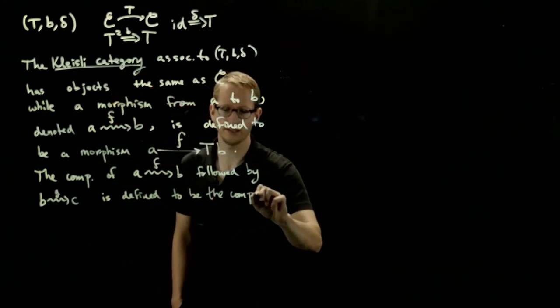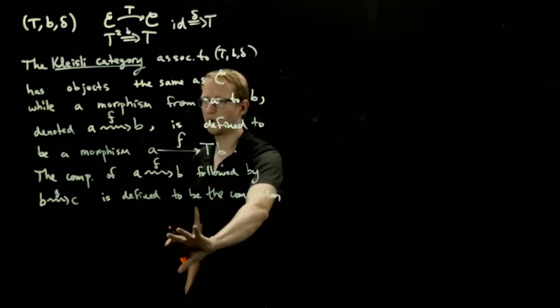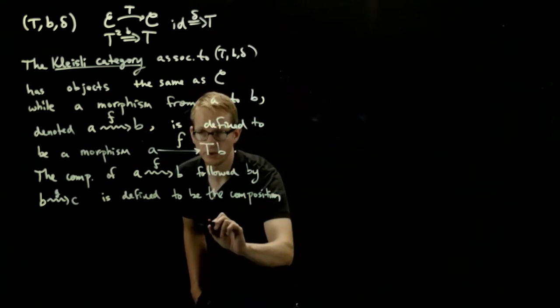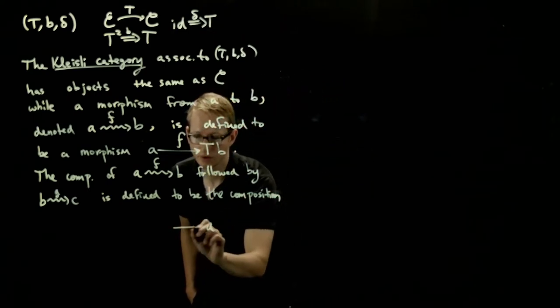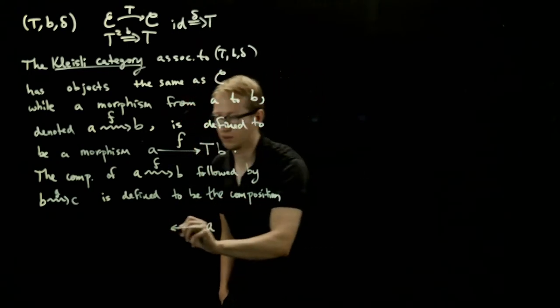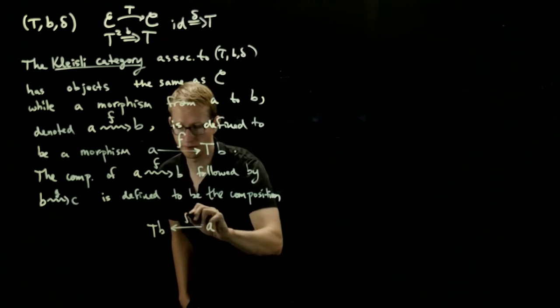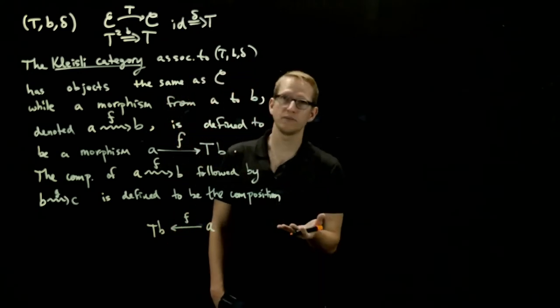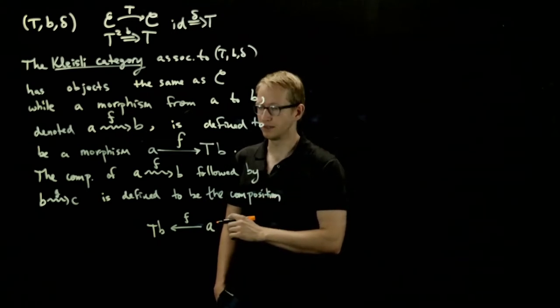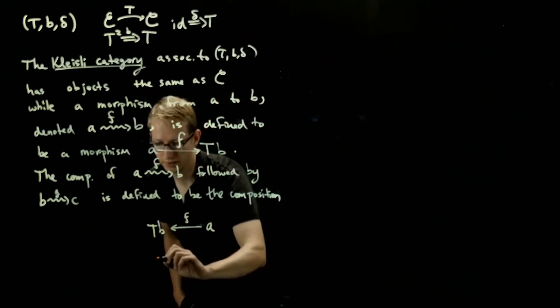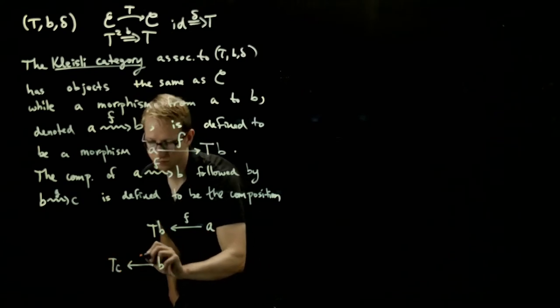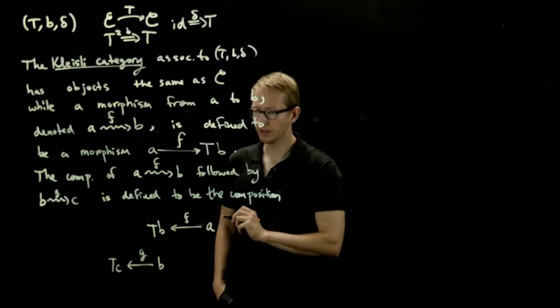We'll define it to be the composition, and before I write down what the formula is, let's all think about what it could possibly be. If we start off in A, the only map we have from A to anything associated to B is our map F. We also have a map from B to T of C, right? So let me write that here. And that's our map G.